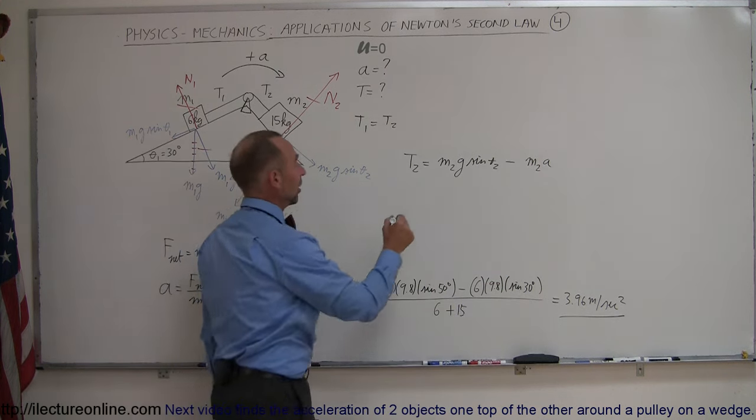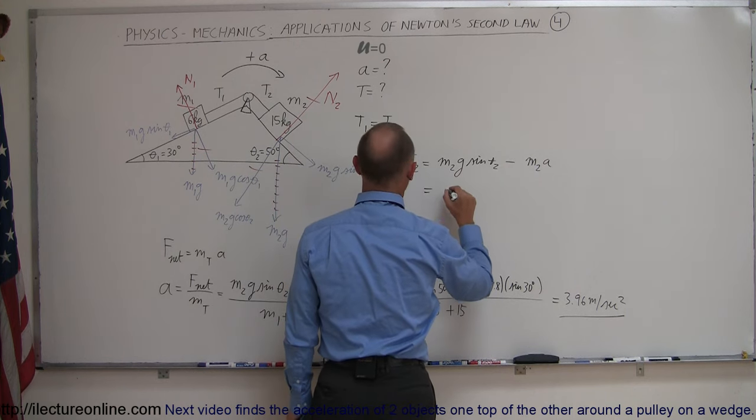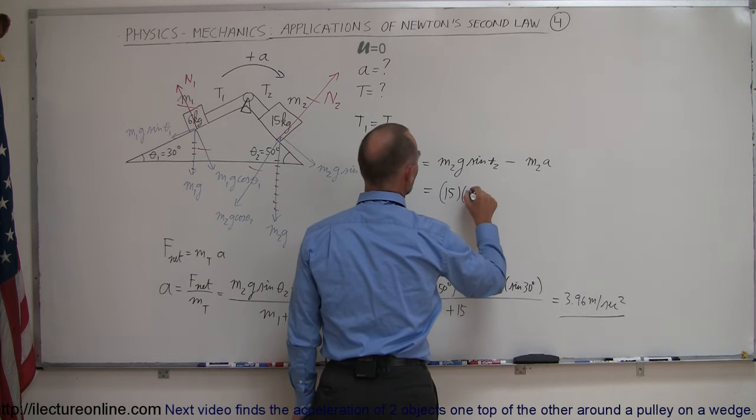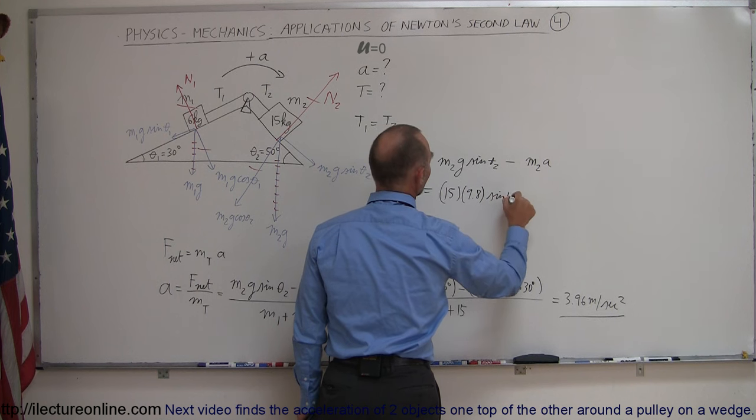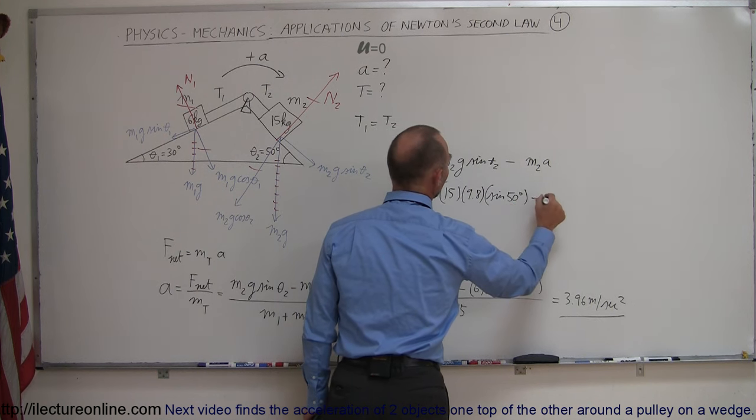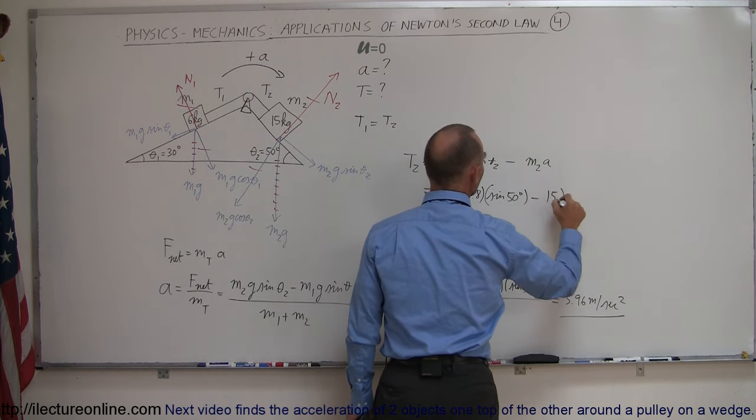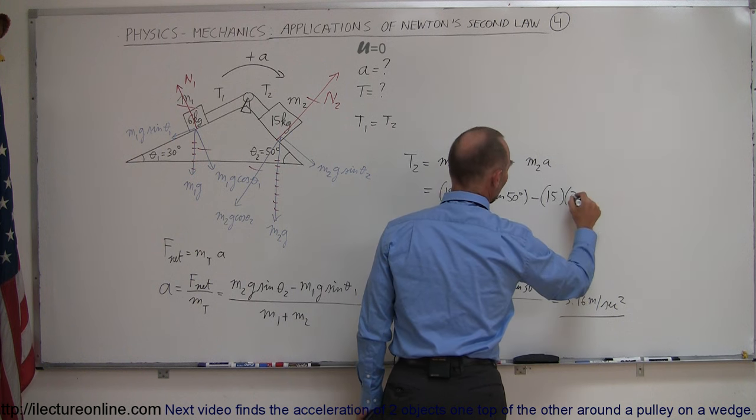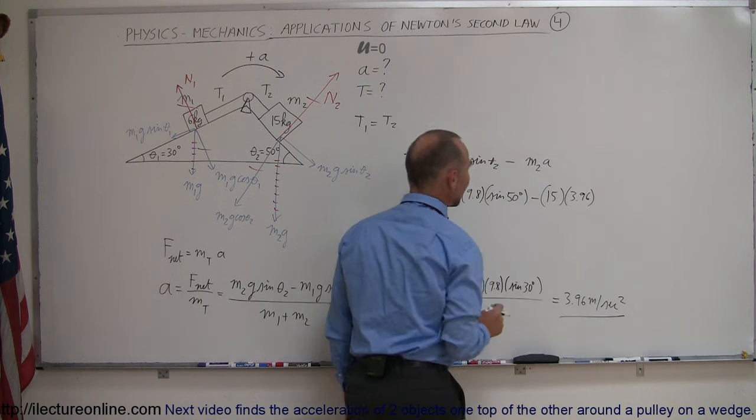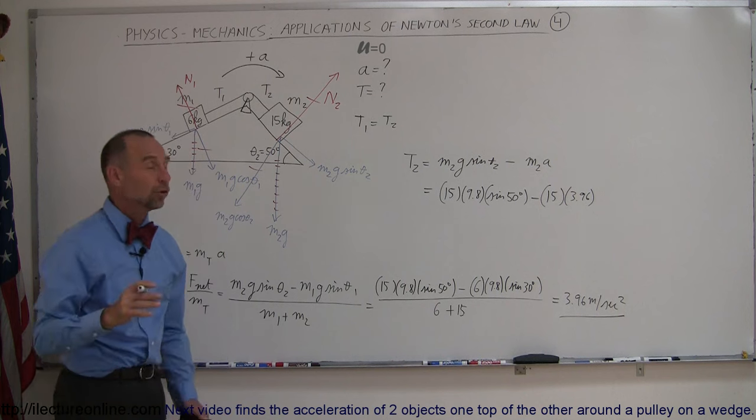Now we plug in the numbers. m2 is 15, g is 9.8, sine of 50 degrees, minus m2 which is 15 times acceleration of 3.96. And again units would be newtons in this case.